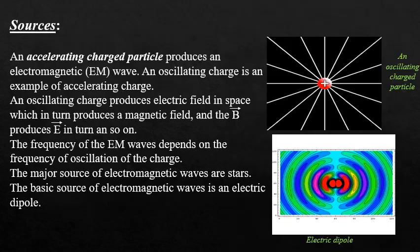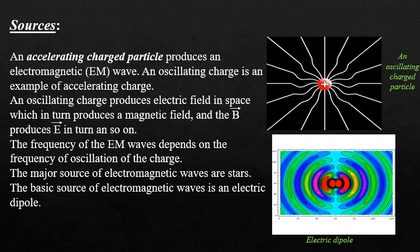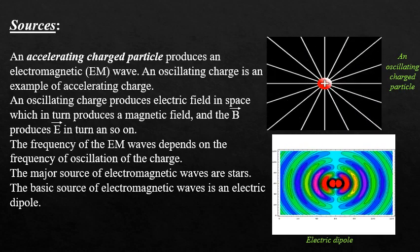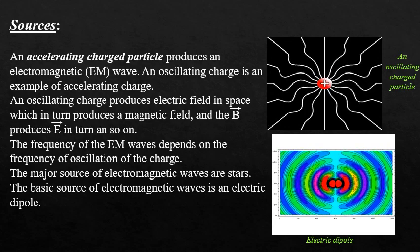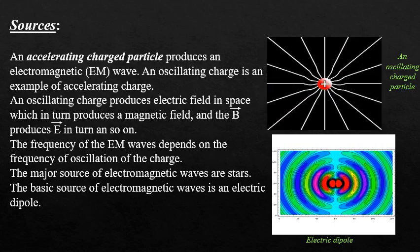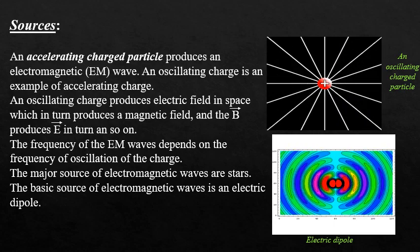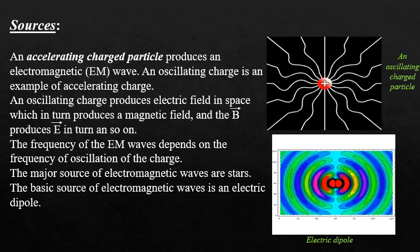According to Maxwell's theory, accelerated charges radiate electromagnetic waves. A charge produces an electric field and a moving charge produces a magnetic field. Hence, an accelerating charge produces an electromagnetic wave.